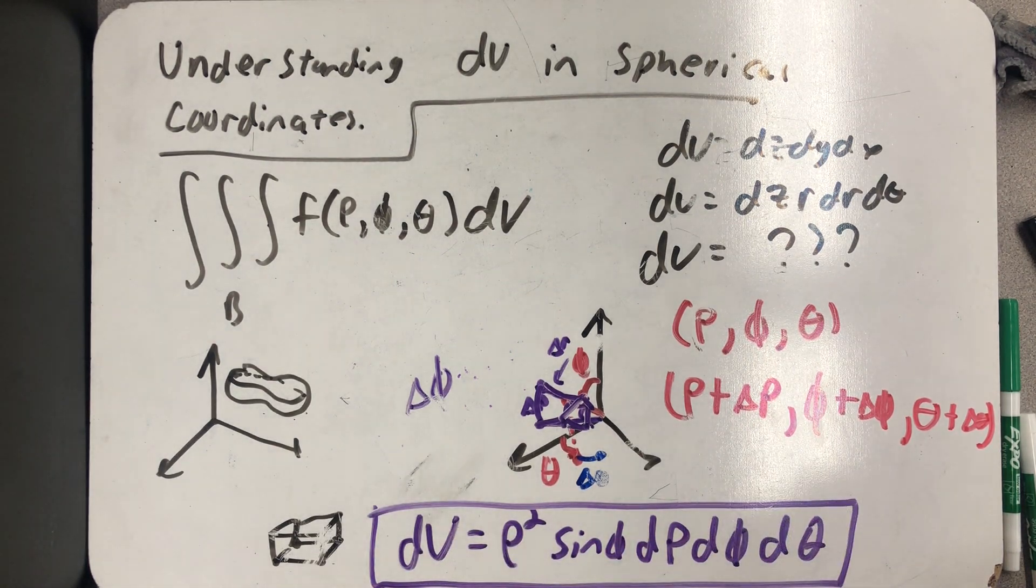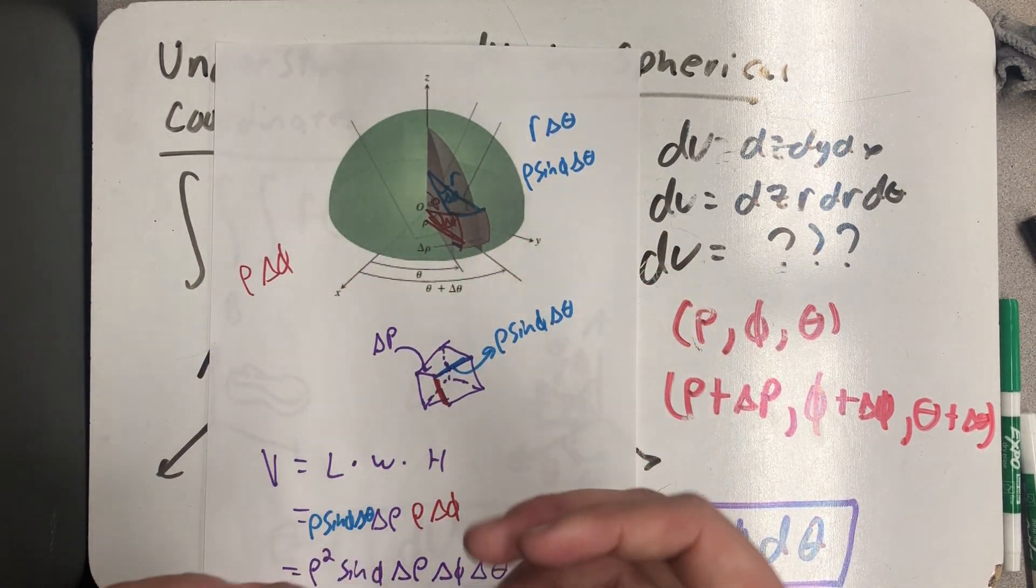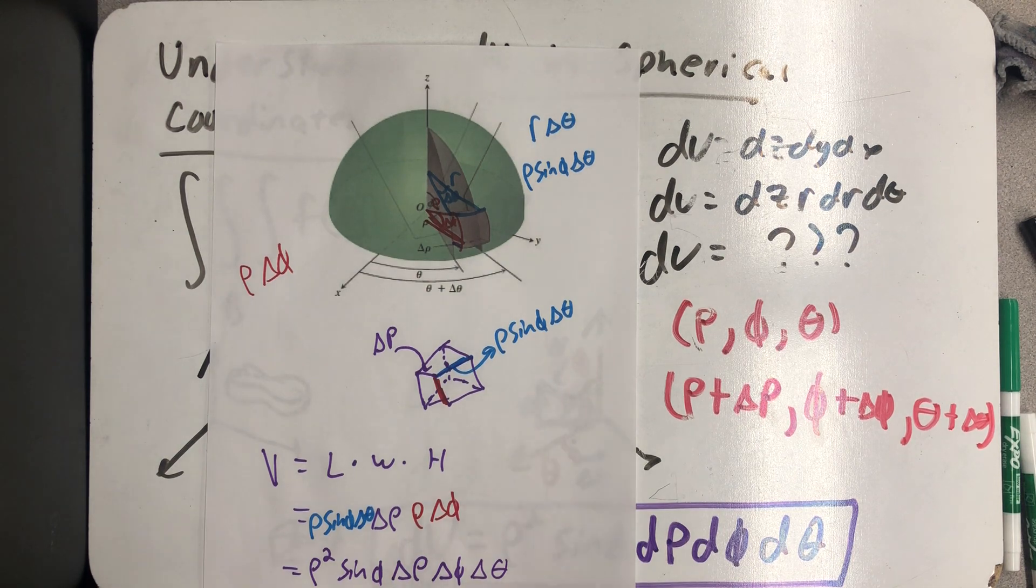As we would let n go to infinity in our Riemann sum, these spherical wedges would get smaller and smaller and look more and more like rectangular prisms. We can actually make that rigorous by applying the mean value theorem.